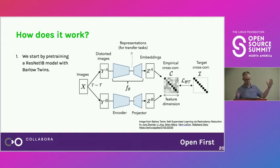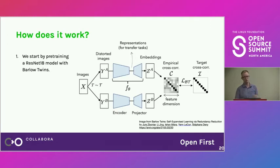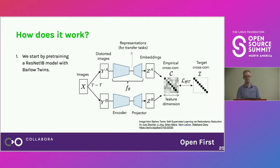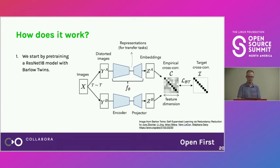Barlow Twins is a contrastive learning method. We take a batch of 16 or 32 images, augment and distort each one in two different ways, then train the model to output correlated features for the same image distorted differently — contrasted against all other images in the batch. It's basically one image against everybody else. It works quite well, and Barlow Twins is nice because it's very simple.